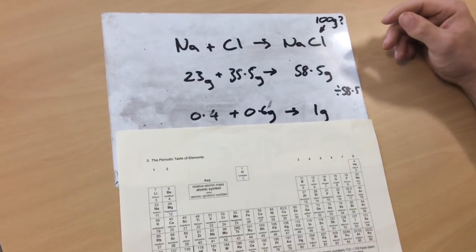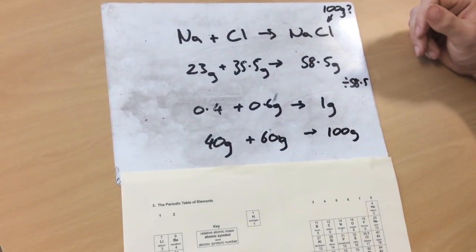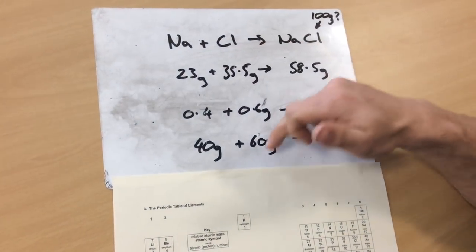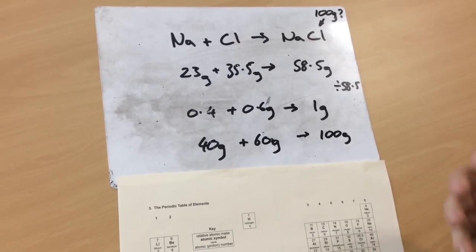Then again, I multiply it by the number I want. I want 100 grams. So I multiply it by 100, and that tells me that I need 40 grams of sodium plus 60 grams of chlorine to give me 100 grams. That's my recipe to make that salt.